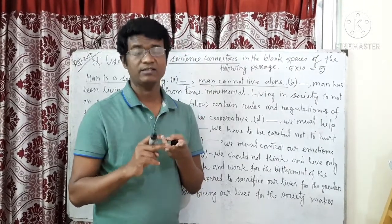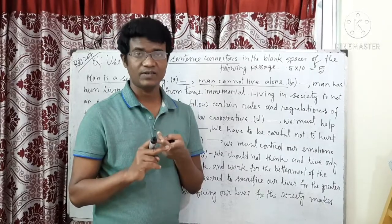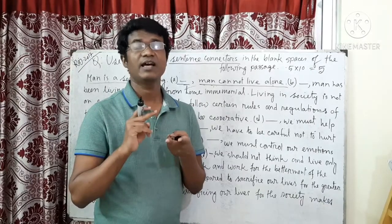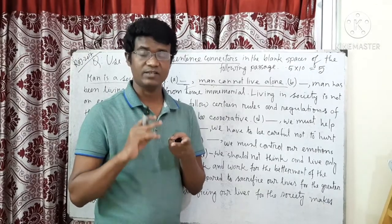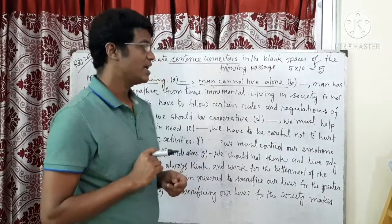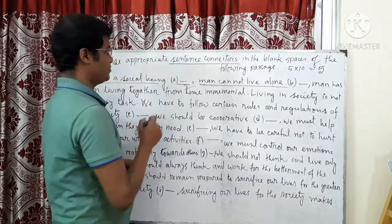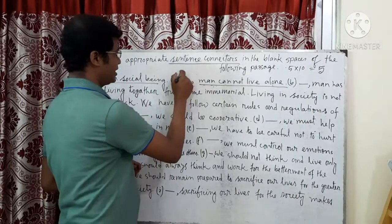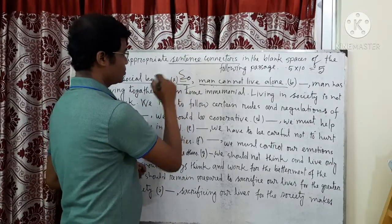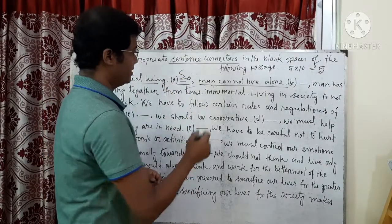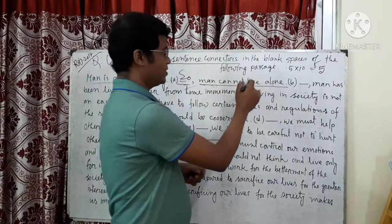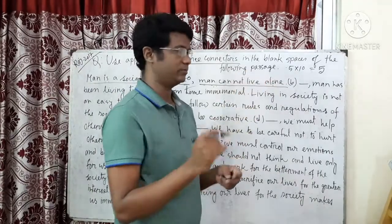The connectors that can be used to show result or consequence are: as a result, consequently, as a consequence, accordingly, so — and using one of these, man cannot live alone.